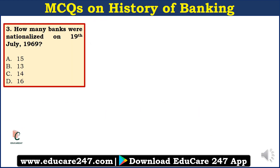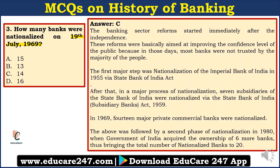Question number three: How many banks were nationalized on 19th July 1969? Was it 15, 13, 14, or 16 banks? The answer is C — 14 banks were nationalized on 19th July 1969.